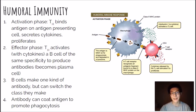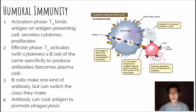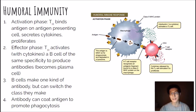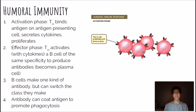A helper T cell comes in, recognizes the MHC-2 display, and binds to it, triggering a signaling mechanism. The macrophage releases chemicals like interleukins that activate the helper T cell. The activated helper T cell then releases cytokines that stimulate it to proliferate — cloning itself to make many more helper T cells that flow around the body, all activated.